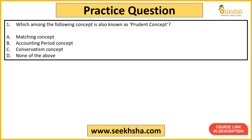So this is our first question: which among the following concepts is also known as prudent concept? Kis concept ko prudent concept bhi bola jata hai? Option a: matching concept, b: accounting period concept, c: conservatism concept, and d: none of the above. Yaha par aapka jo right answer hai, that is option c — conservatism concept ko prudent concept bhi bola jata hai.